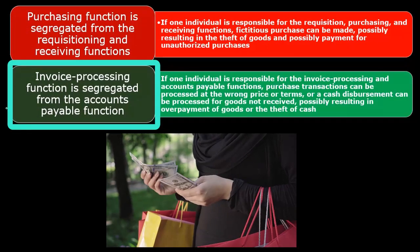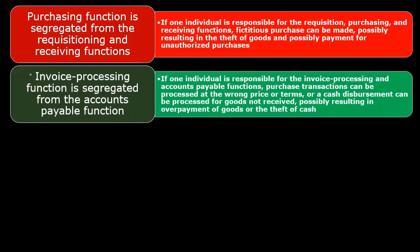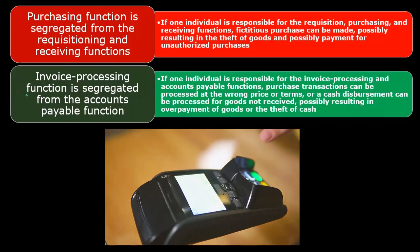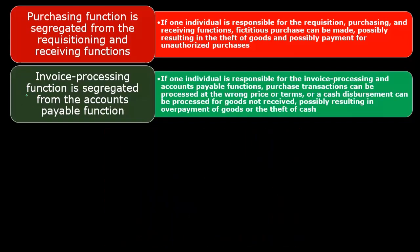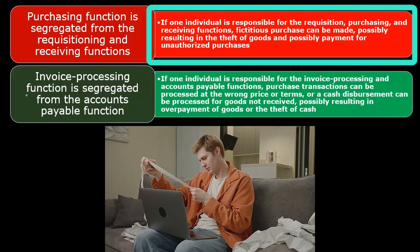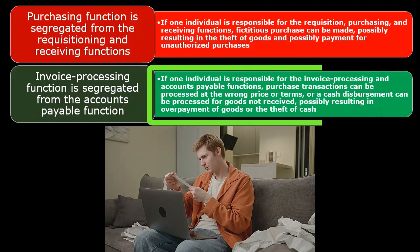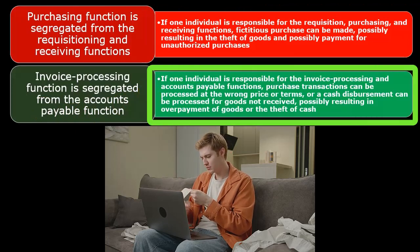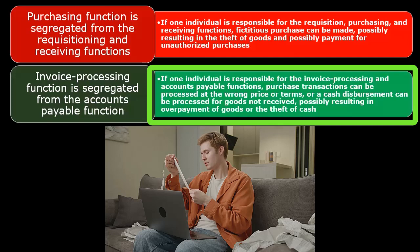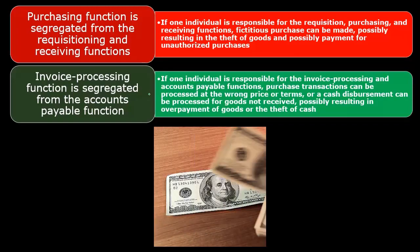The invoice processing function is segregated from the accounts payable. The invoice coming from the vendor to us is segregated from the accounts payable — the actual recording of the activity in accounts payable. We typically imagine receiving the inventory along with the invoice or billing. If one individual is responsible for the invoicing process and the accounts payable function, purchase transactions can be processed at the wrong price or terms, or a cash disbursement can be processed for goods not received.